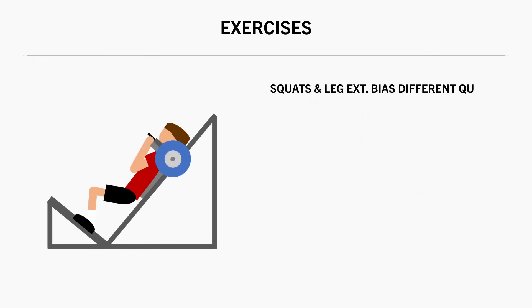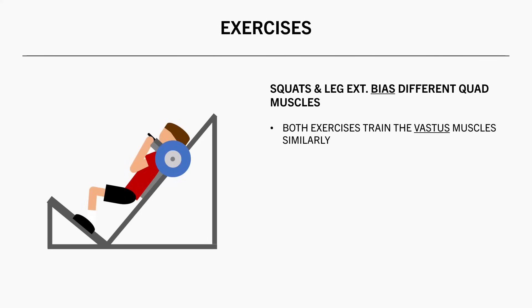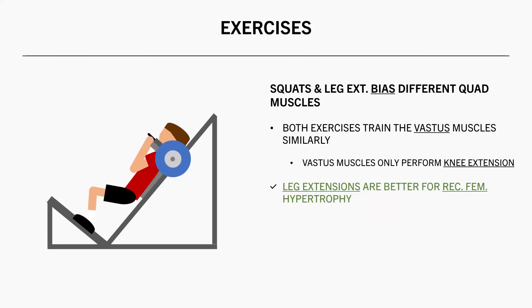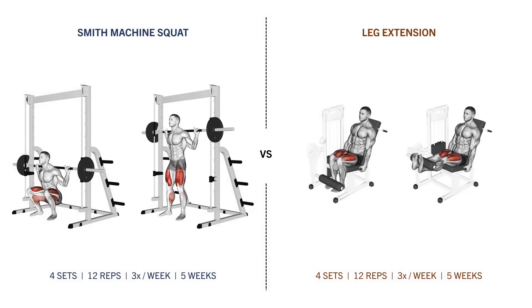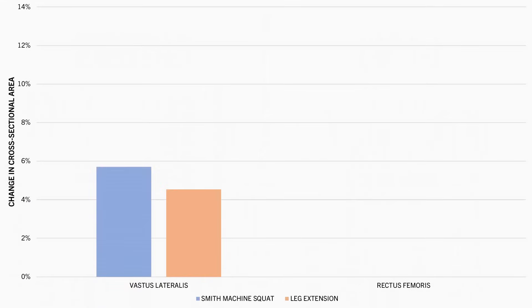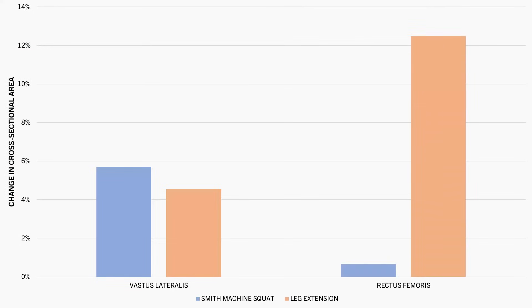The other difference between squats and leg extensions is which specific quad muscles are emphasized. Both exercise categories train the vastus muscles to a similar magnitude, which makes sense since the vastus muscles perform knee extension only and both exercises require it. However, the rectus femoris will likely experience superior growth from leg extensions compared with squats due to its biarticular nature. The rectus femoris shortens at the knee but lengthens at the hip during squats, but the hips don't move during leg extensions so it can maximally contribute. A study comparing smith machine squats versus leg extensions confirmed this — vastus lateralis saw similar gains from both, but the rectus femoris experienced substantially greater gains from leg extensions.